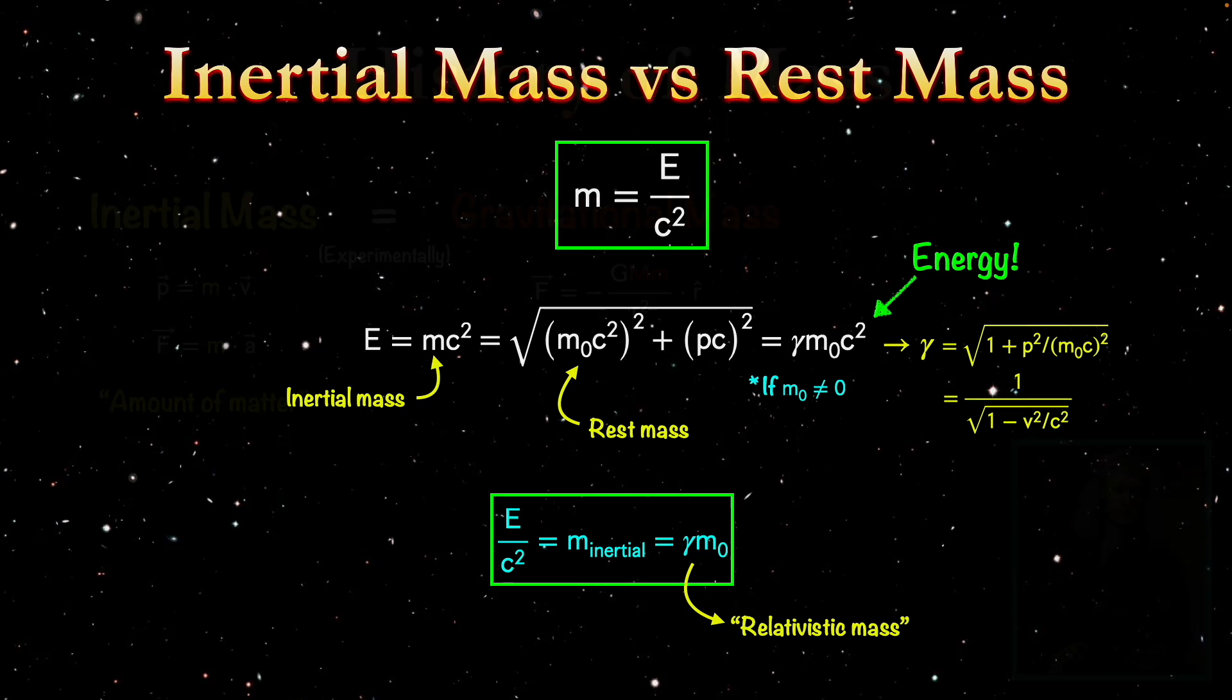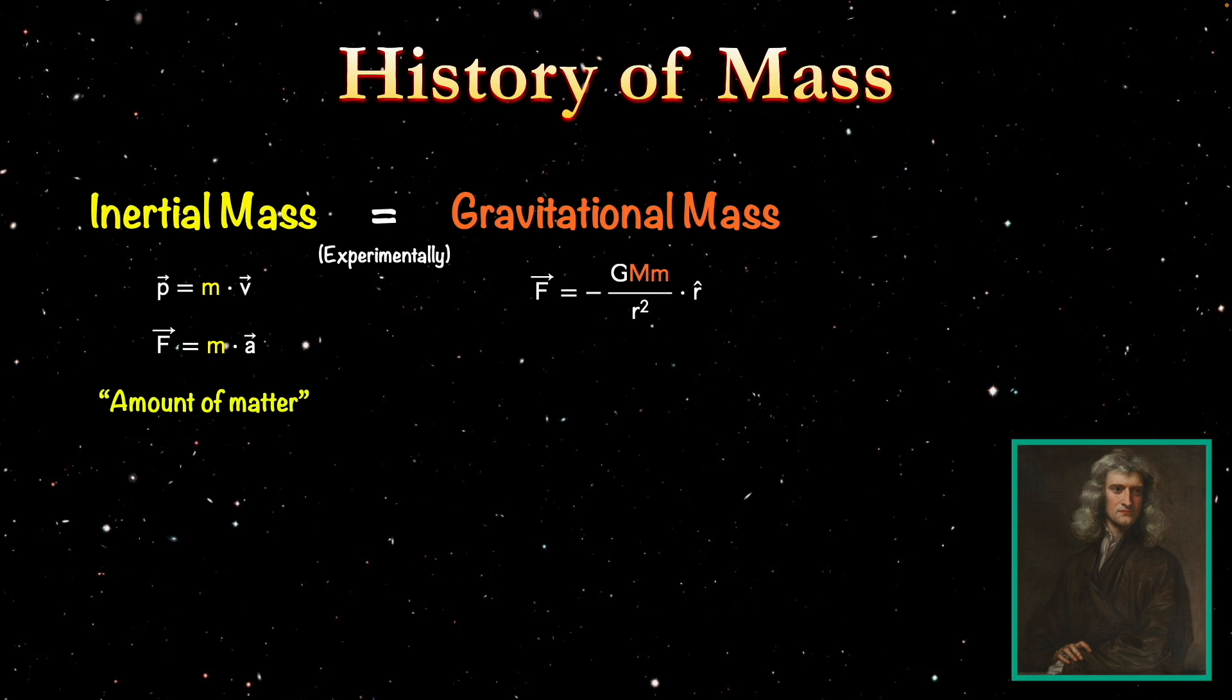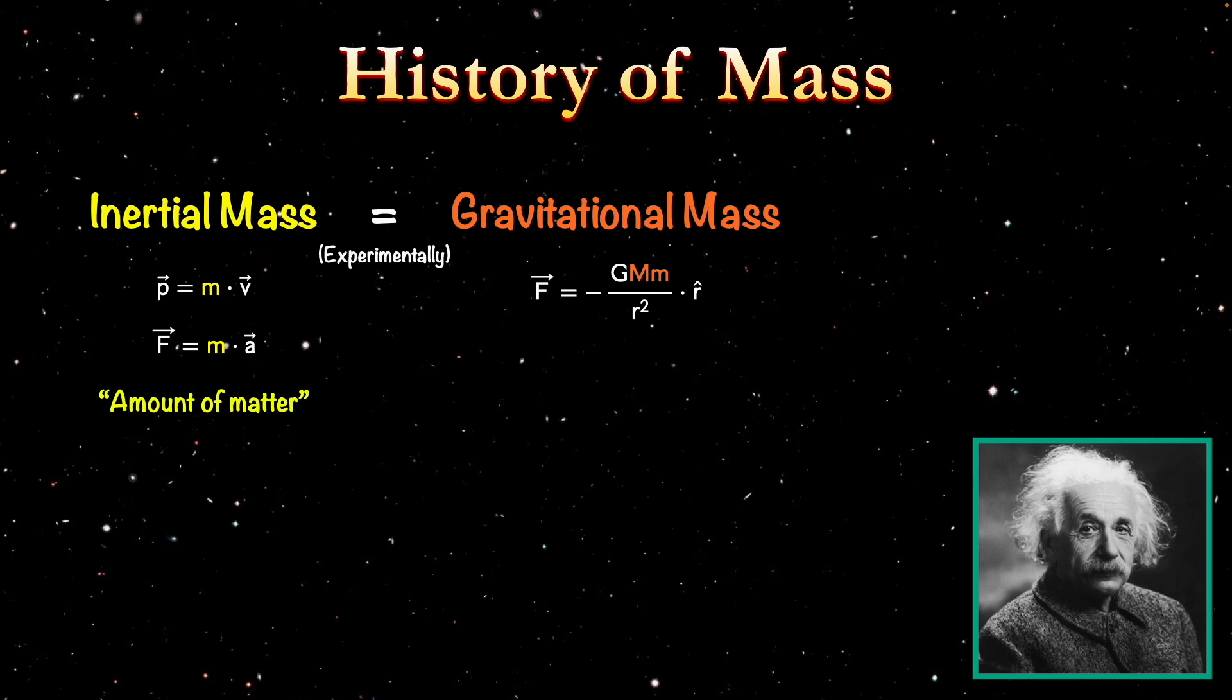Now we have to see how this new way of looking at mass fits with our original definitions from Newton. And it turns out we have to make a few modifications. So Newton is out, and Einstein is in, and we now have a third type of mass called rest mass. Originally, we thought of the inertial mass as the amount of matter in an object. But we just saw that the inertial mass changes with speed, so that doesn't make any sense. So this view of inertial mass doesn't work.